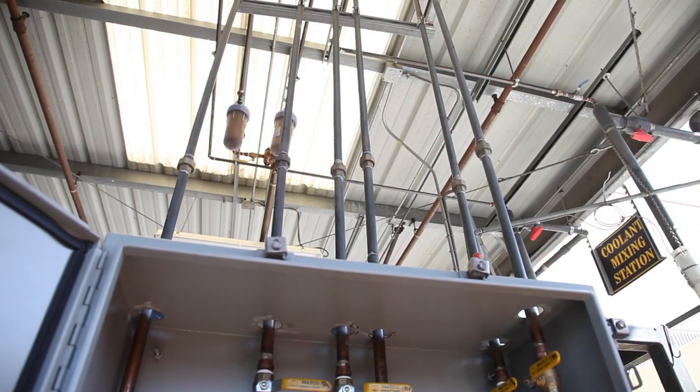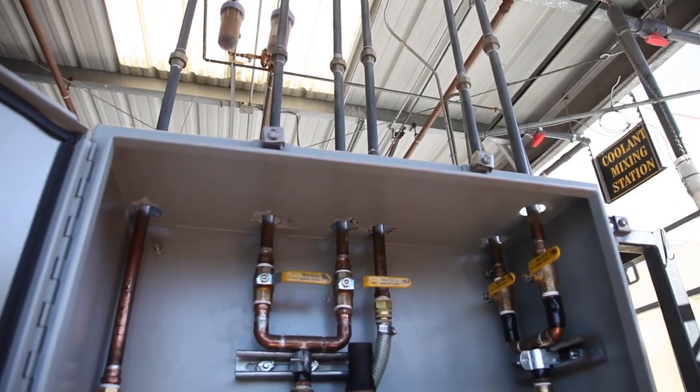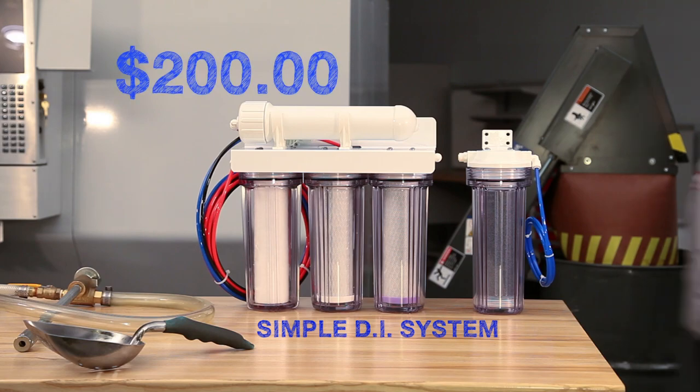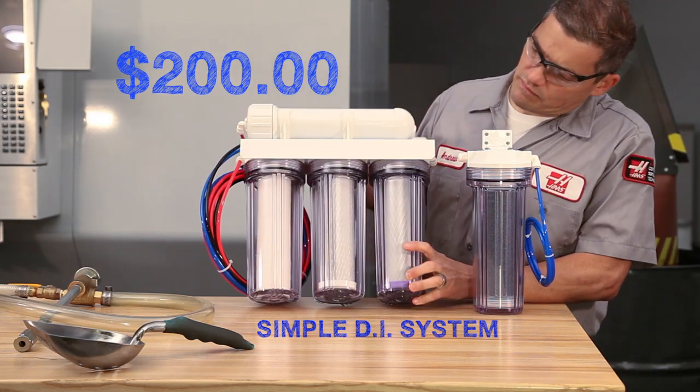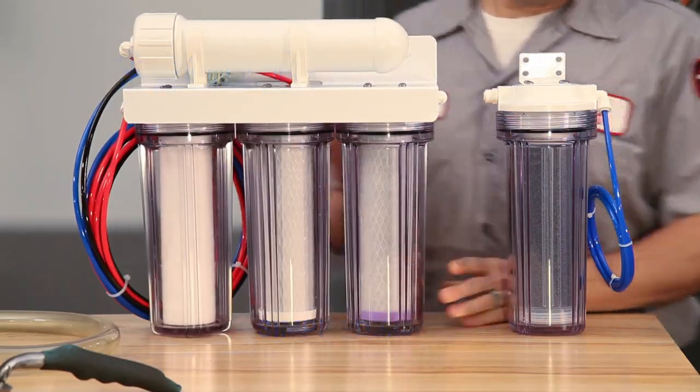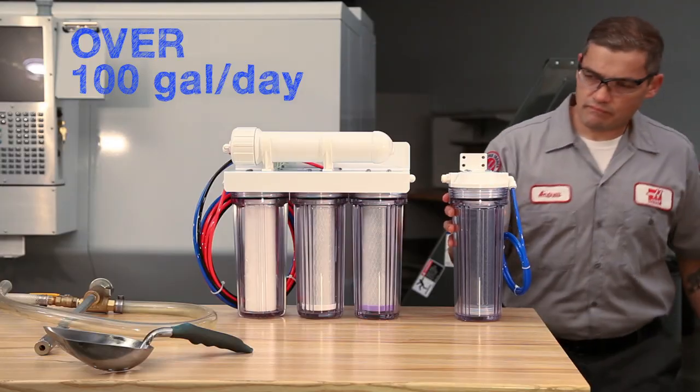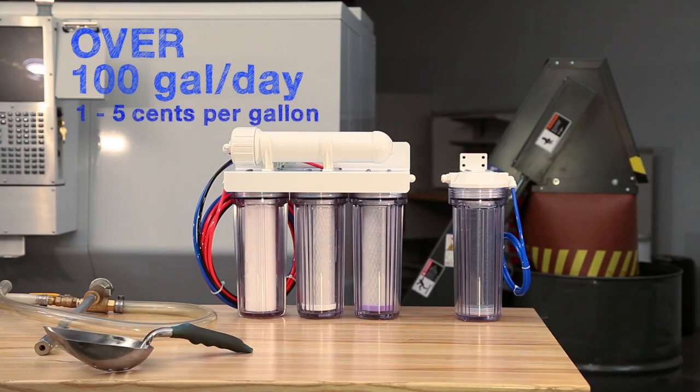Large shops with many machines often have complex installations maintained by water purifying companies. For smaller shops, simple, inexpensive units for a few hundred dollars are usually just fine. These simple systems combine reverse osmosis and deionization and can provide more than a hundred gallons of purified water a day, for a cost of five cents or less per gallon.